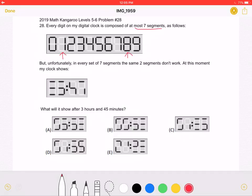But unfortunately, in every set of seven segments, the same two segments don't work. At this moment, my clock shows this. What will it show after three hours and 45 minutes?